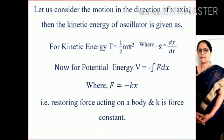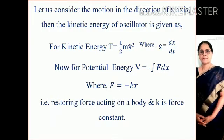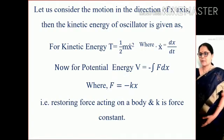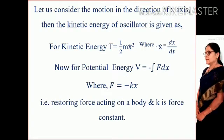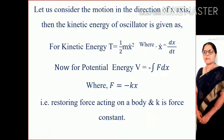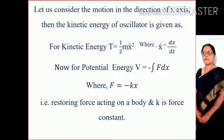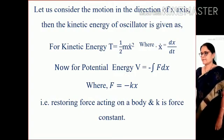At equilibrium, f is equal to 0. It is a function of the position of the mass or particle. Considering motion in the direction of the x-axis, the kinetic energy of the oscillator is given as T = (1/2) m x-dot squared, where x-dot equals dx/dt according to classical mechanics.